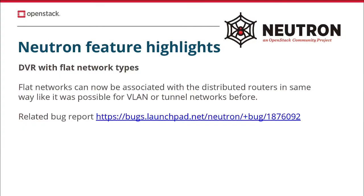The next feature introduced in this release is support for flat networks in DVR distributed routers. Previously you could only attach VLAN or tunnel-based networks like VXLAN or GRE to DVR routers. If you attached a flat network to DVR routers, strange things could happen — for example, duplicate packets sent through the interfaces on that network. More information about that is available in the related bug report linked on this slide.